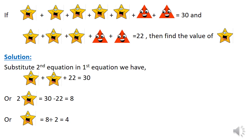We have 2 stars plus 22 equal to 30. 2 star equal to 30 minus 22 equals to 8. Star equal to 8 divided by 2 equal to 4.